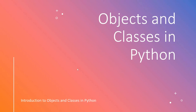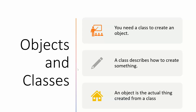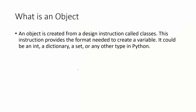This is going to bring us to the introduction to objects and classes in Python. You need a class template to actually create or instantiate a real object. A class in object-oriented programming describes how you can actually create something. And an object is the actual thing that you've created based on following a class template. That's the relationship between a class and an object.